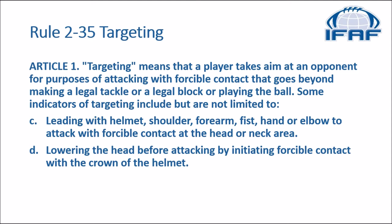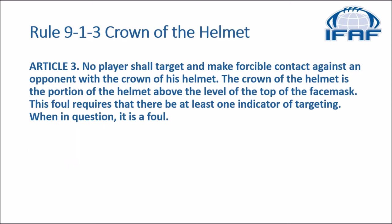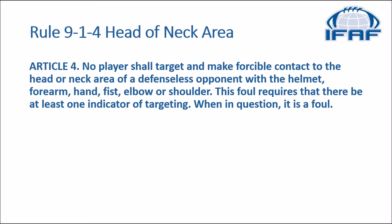Indicator D) lowering the head before attacking by initiating forcible contact with the crown of the helmet. In Rule 913, the crown of the helmet is defined: no player shall target and make forcible contact against an opponent with the crown of his helmet. The crown of the helmet is the portion of the helmet above the level of the top of the face mask. This rule requires at least one indicator of targeting — when in question, it is a foul. Rule 914 says no player shall target and make forcible contact to the head or neck area of a defenseless opponent with the helmet, forearm, hand, fist, elbow, or shoulder. This rule also requires at least one indicator of targeting — when in question, it is a foul.